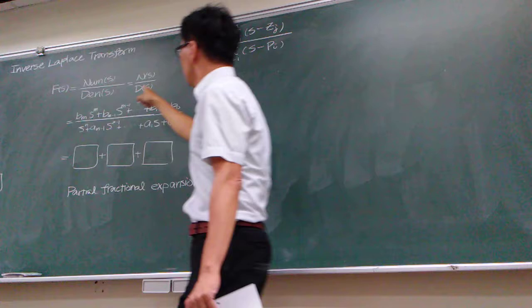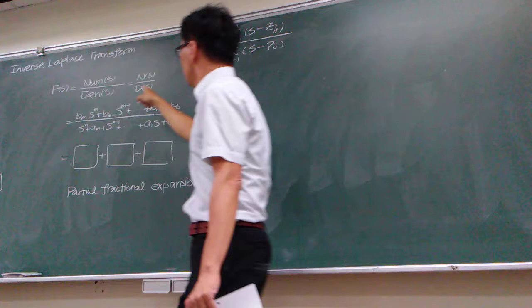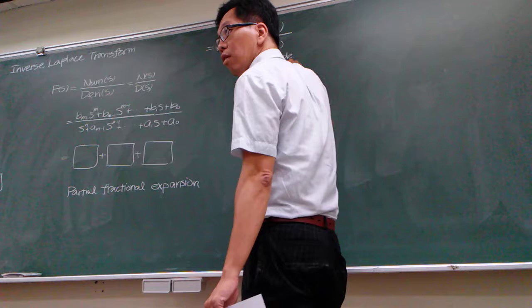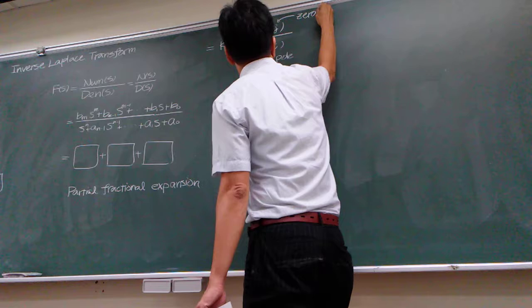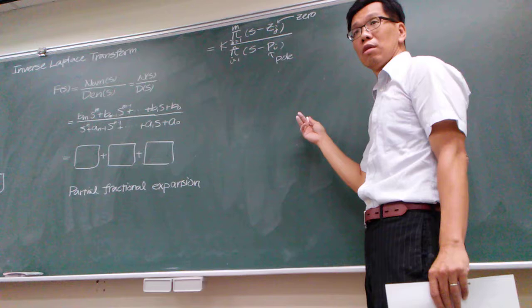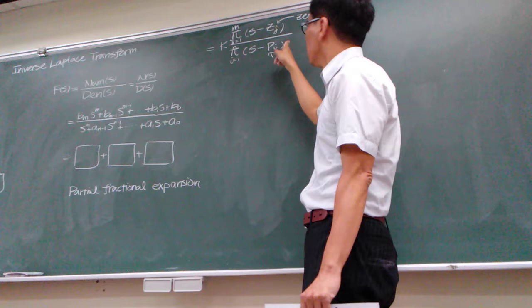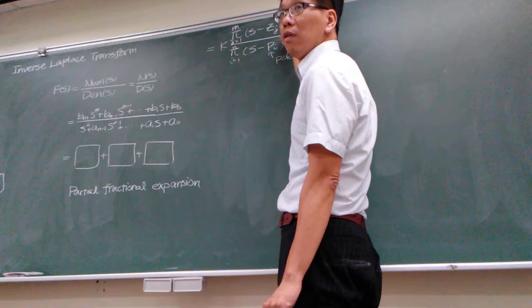The roots in your denominator — we call those poles. The roots in your numerator — we call those zeros. That is just a definition of terminologies. So when I say poles, I'm talking about the roots in your denominator. When I'm talking about zeros, it means the roots of your numerator. Just a definition — everybody understand what I'm talking about?